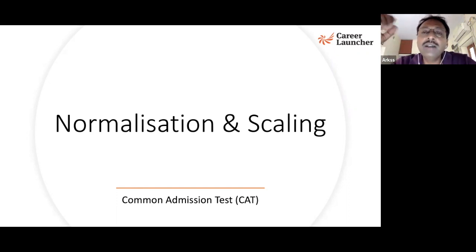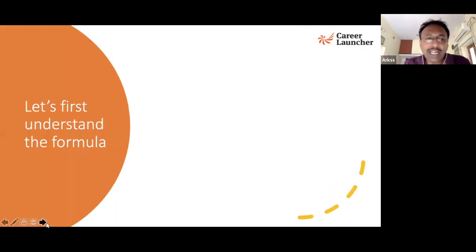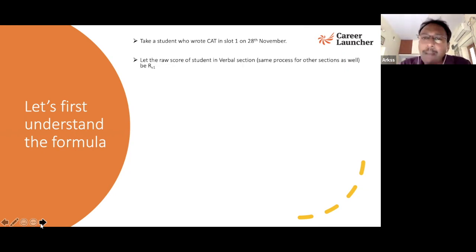First, the basics of mean and standard deviation - I'm not going to tell you how to do the mean and standard deviation, but I think it's important that you understand what is a mean and standard deviation. Let's first understand the formula that the IIMs are using. Take a student who wrote the CAT in slot one of 28th November. This person's raw score in verbal is some RV1, raw score one verbal.